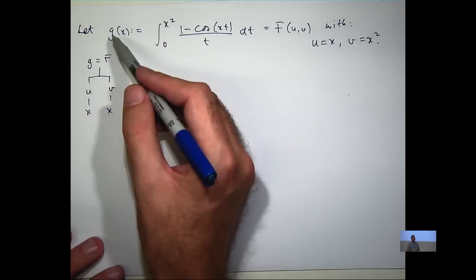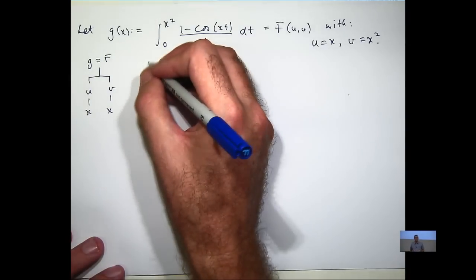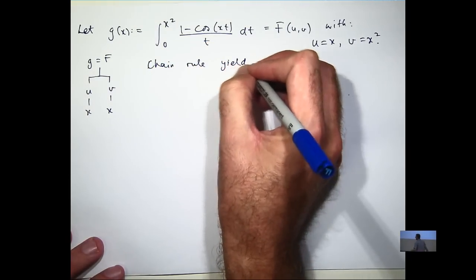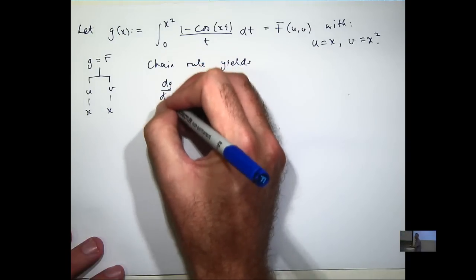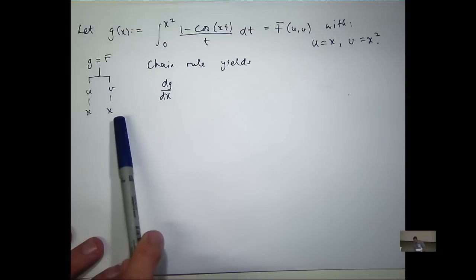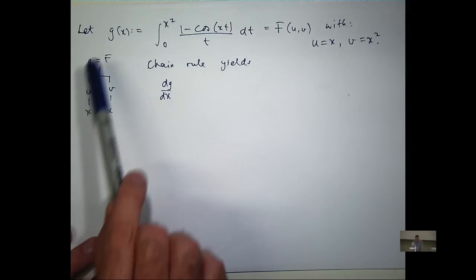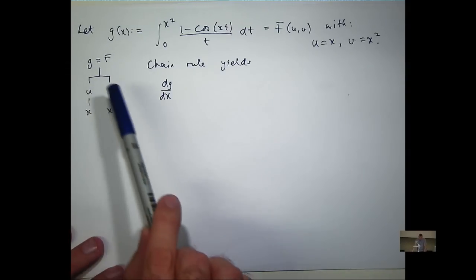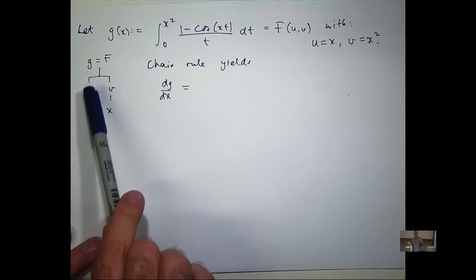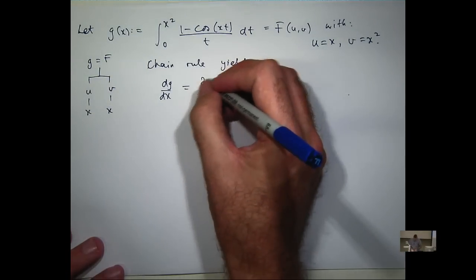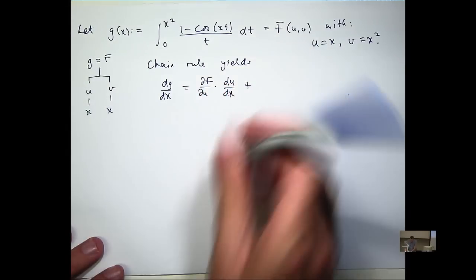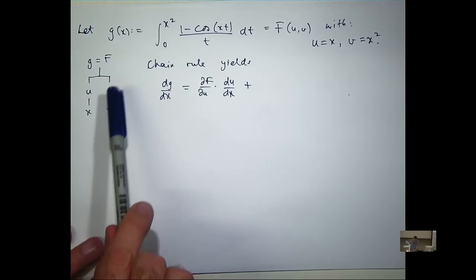So to calculate dg/dx, I look at all the x's down here and I find a path from the top to an x. When I move from letter to letter, I form a derivative. So there's one path: it's ∂F/∂u times du/dx, plus the other path: ∂F/∂v times dv/dx.